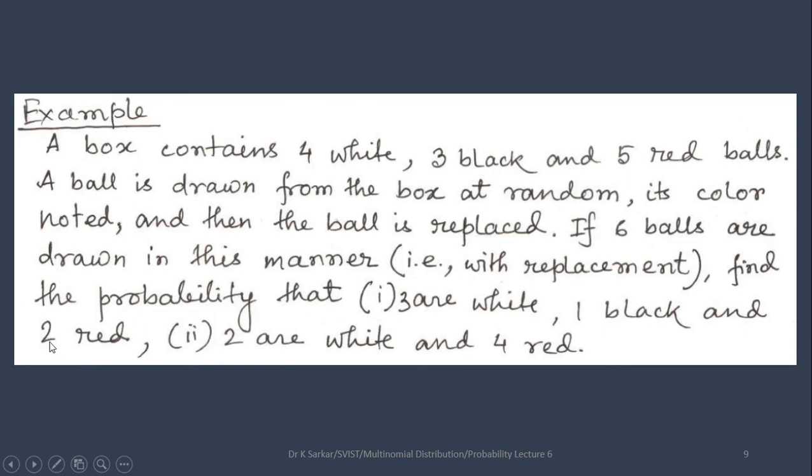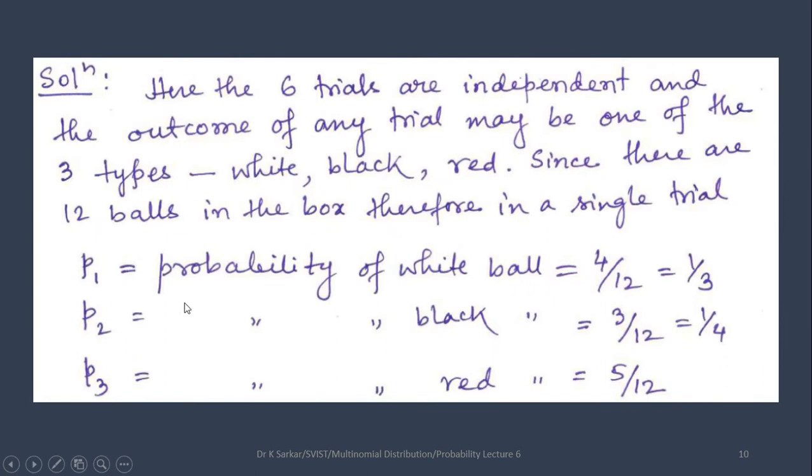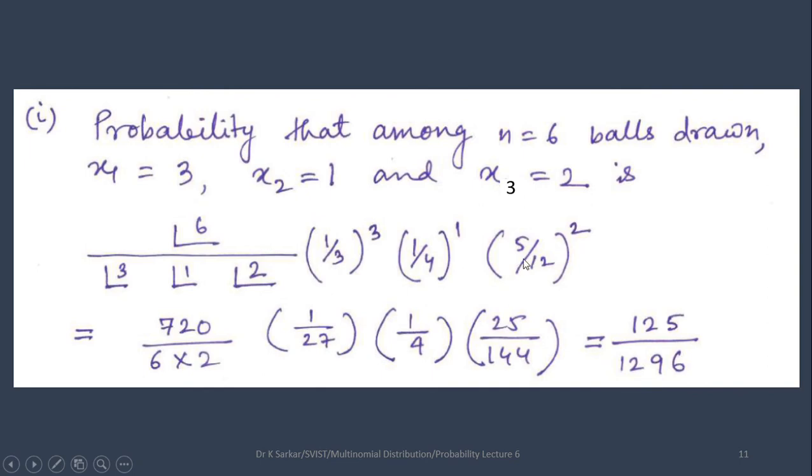Now, let us put all of these in expression 1 and we are getting factorial 6 divided by factorial 3, factorial 1, factorial 2 and p1 is 1 third power x1 that is 3. p2 is 1 fourth power 1, and p3 is 5 by 12 power x3 that is 2. After calculation, we are getting the result 125 by 1296.